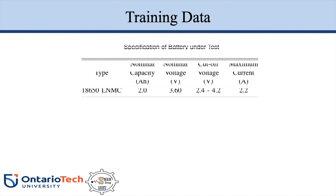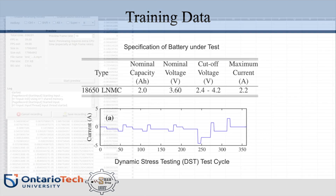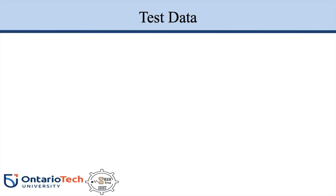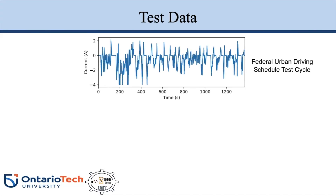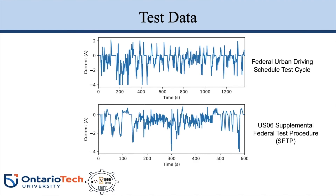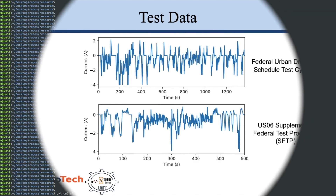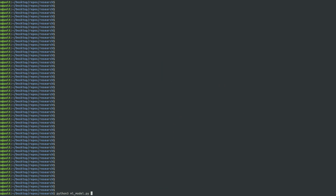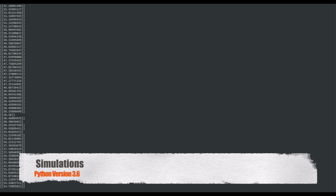For this experiment, dynamic stress testing is used as training data, while Federal Urban Driving Schedule and Federal Highway Driving Schedule are used as test data. Outputs from KNN are filtered using a Gaussian filter to reduce the fluctuation in results.